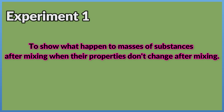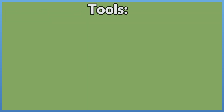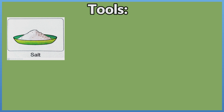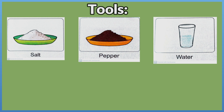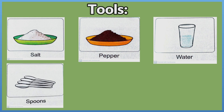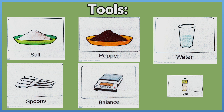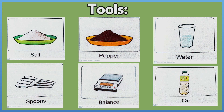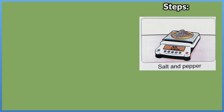Experiment 1: To show what happens to the masses of substances after mixing when their properties don't change. Tools: salt, pepper, water, spoons, balance, and oil. Steps: 1. Weigh 10 gm of salt and 10 gm of pepper using the balance. 2. Mix the salt and pepper together using a spoon, then weigh the mass of this mixture and compare the summation of their masses before and after mixing.